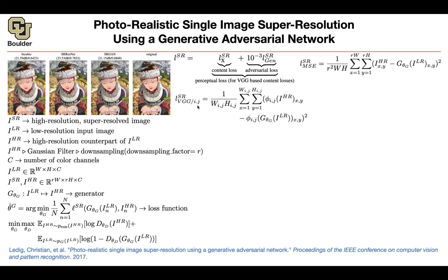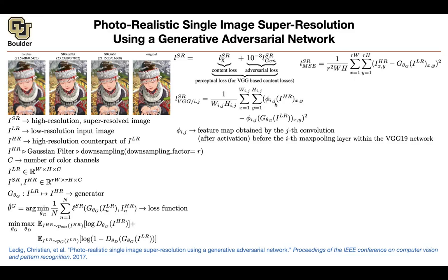Phi i,j is your network, and you're cutting your network at the j-th convolution after the activation — so this is after ReLU and before doing any max pooling. Before the i-th max pooling, you stop there and then compare the features. This is supposedly going to give you the meaning of an image. You don't care about every single pixel in your image — you care that this image corresponds to a person, for instance. It has a meaning.